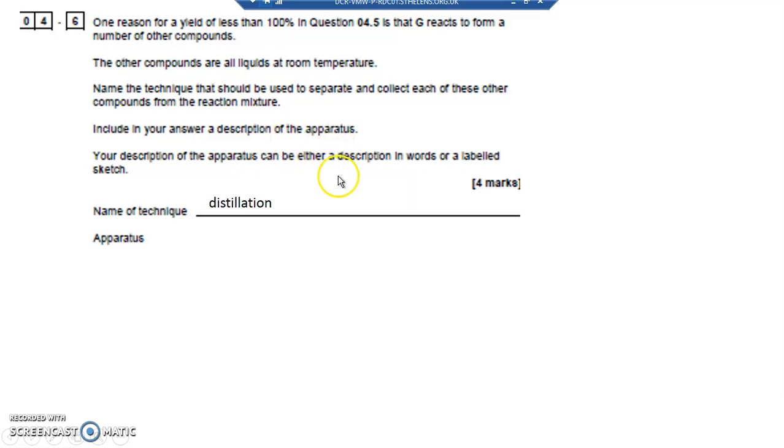What kind of apparatus? Well, let's draw it. So what we've got is a round bottom flask, a fractionating column, a thermometer, and then a condenser coming down into a conical flask.